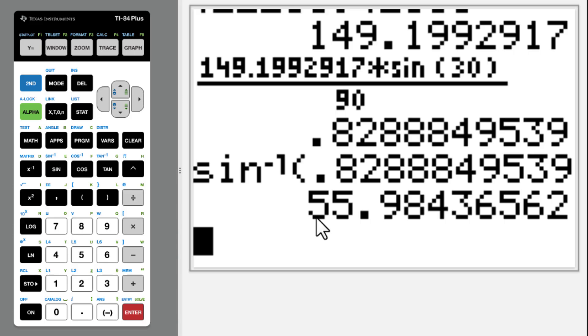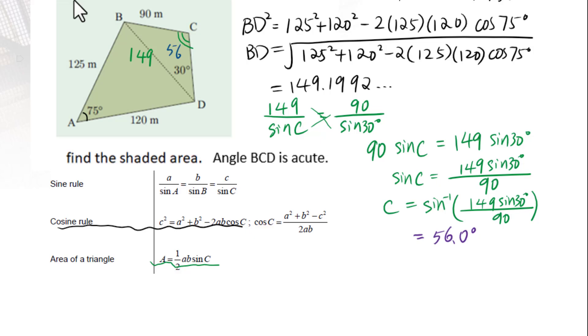Angle C is 56.0 degrees and angle C is still not included angle. We need to figure out angle DBC equals 180 degree minus 56.0 degree minus 30 degree equals 94 degree.